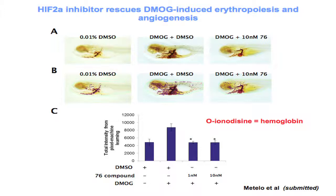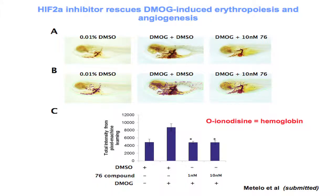We took this fish and also mimicked VHL disease by treating it with a chemical called DMOG, which poisons the prolyl hydroxylases that are deregulated in VHL disease. If we treat a wild-type fish with this DMOG inhibitor, we make it appear as if it has VHL disease. We stained it with a stain that marks red cells, allowing us to quantify erythrocytosis and vessel development. We trained a computer algorithm to objectively quantify the intensity, and then treated the fish with the HIF2-alpha inhibitor, demonstrating significant decrease in the effects of HIF on erythrocytosis and vascular development.